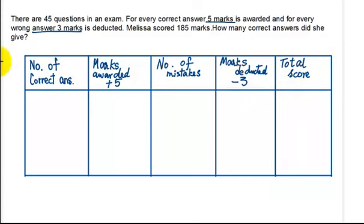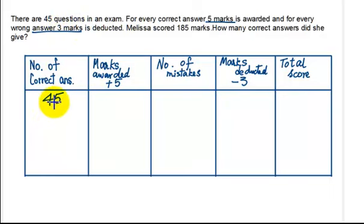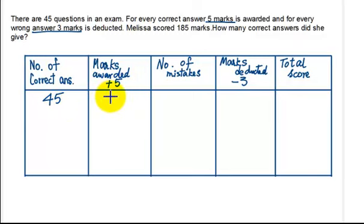Number of correct answers: assuming Melissa got all the answers correctly, she got all 45 questions correct. Now, in this scenario, what would happen? The marks scored would be 5 marks for every question, so 5 times 45, that would be 225.